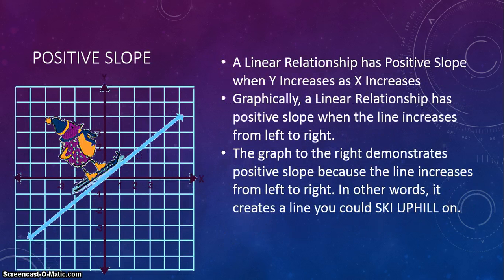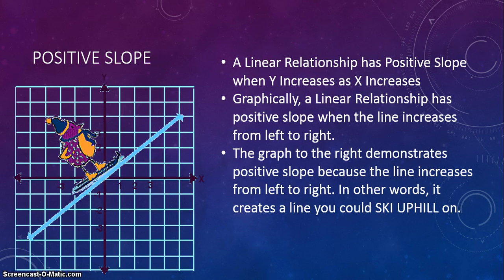A linear relationship has positive slope when y increases as x increases. Graphically, a linear relationship has a positive slope when the line increases from left to right. A graph with a positive slope is going to look like a hill that you can ski up on, like the penguin skiing up on that line.